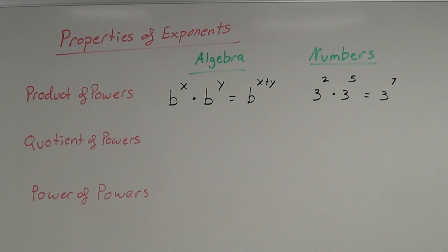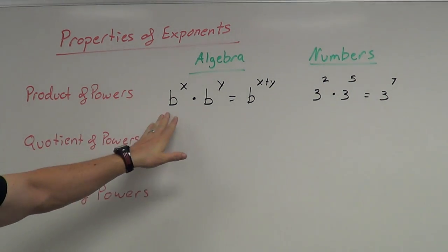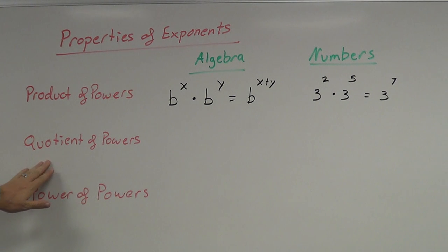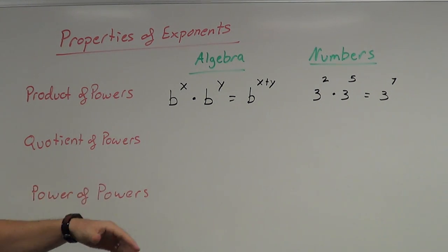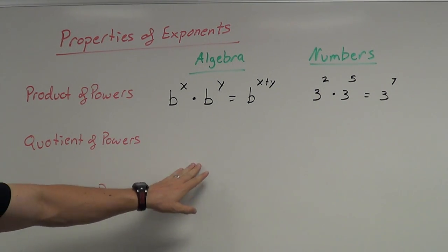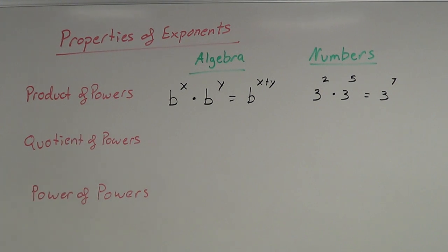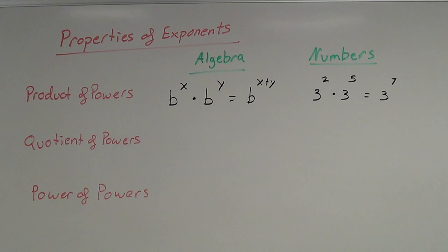Now let's move on to the quotient of powers. Product means we multiply, so we multiplied like bases. Quotient means divide. The quotient of powers rule tells us that if you're dividing like bases, you need to subtract the exponents.